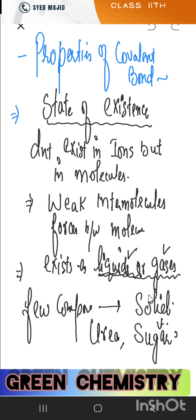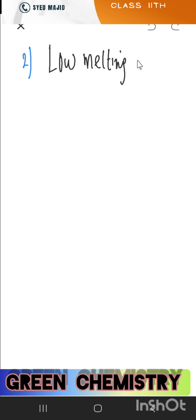First property is state of existence. Second property: melting and boiling points. Because covalent compounds have weak intermolecular forces of attraction, they have low melting and boiling points. The weaker the force of attraction between molecules, the lower the melting and boiling points.